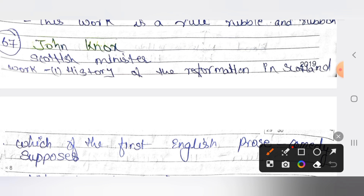John Knox was exiled from England. During his exile, John Knox had a license to work in the church of England.